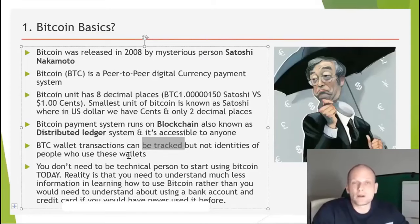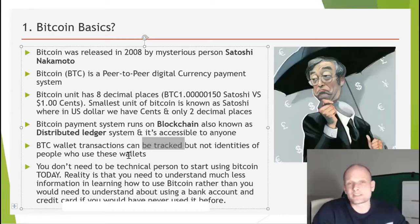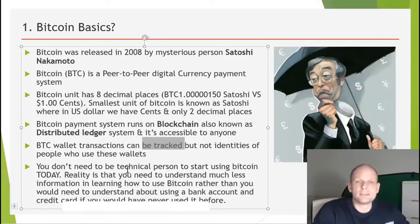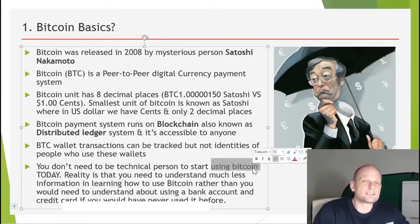Your Bitcoin wallet's public key is pretty much your bank account number — you share it with anyone. For example, if you want to receive money from a business, you send them your public key and they send Bitcoin to it. To access your Bitcoin on the blockchain, you use your private key. Public key for sharing, private key for accessing your funds.